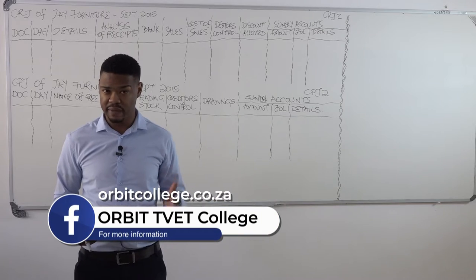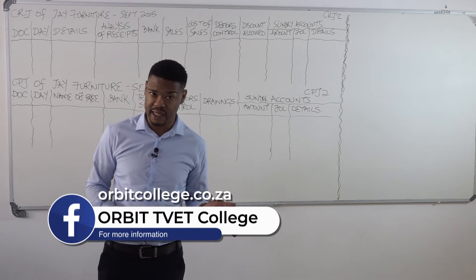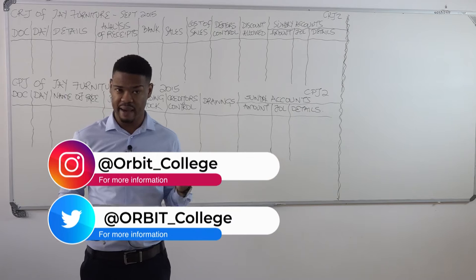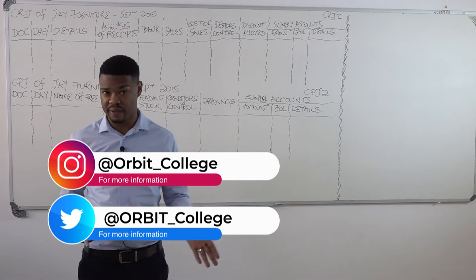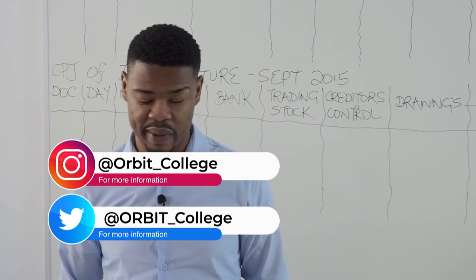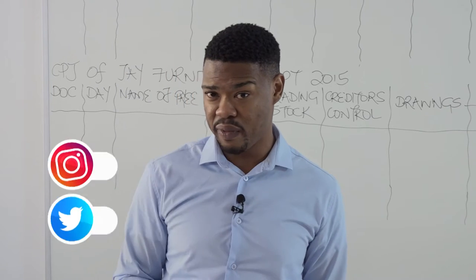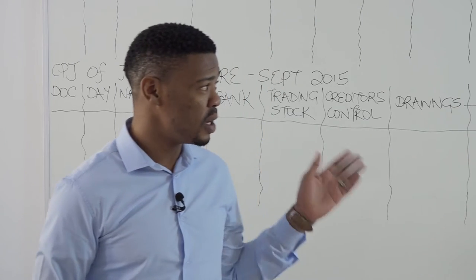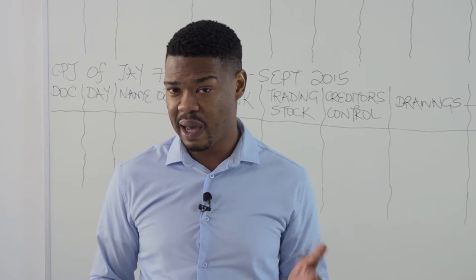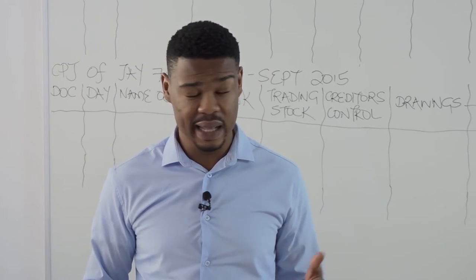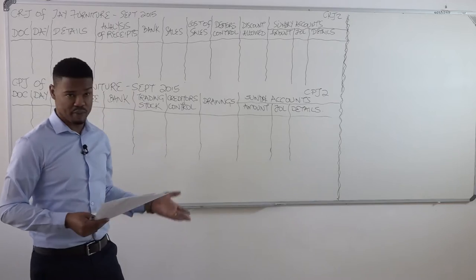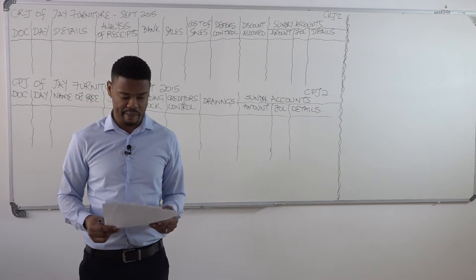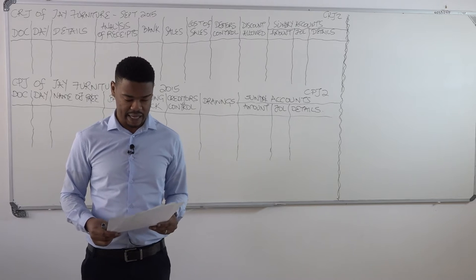Remember when you receive a question it will have cash register rolls, it might have receipts, it will have deposit slips and it will have check counterfoils and the remaining source documents. Your job is to take all of that information and put it inside of your journals. In Applied Accounting Level 2, your journals are going to be given to you so you don't have to start writing them or designing them from scratch.